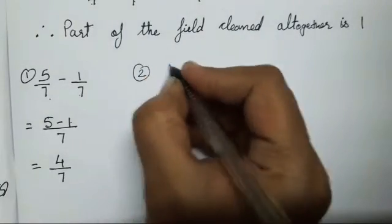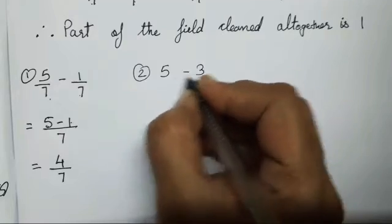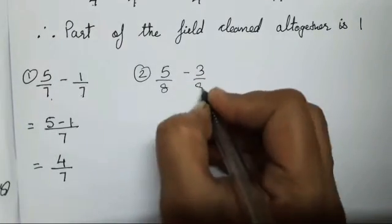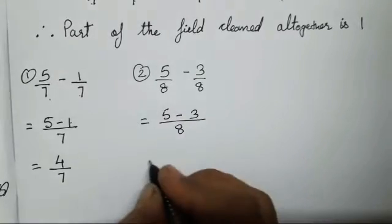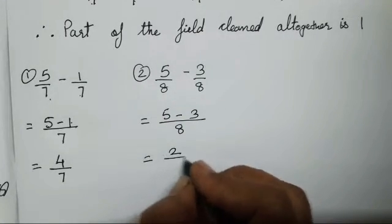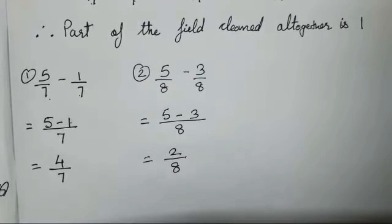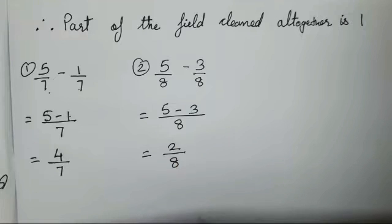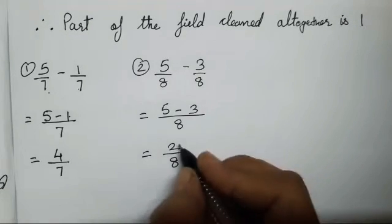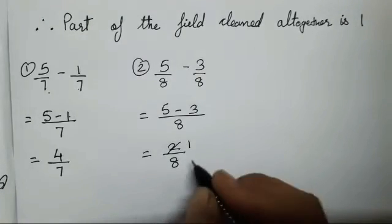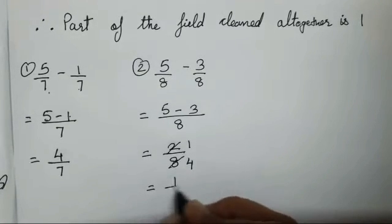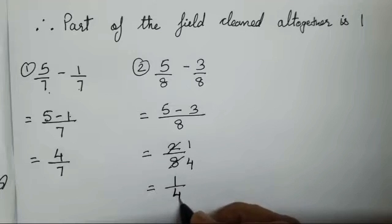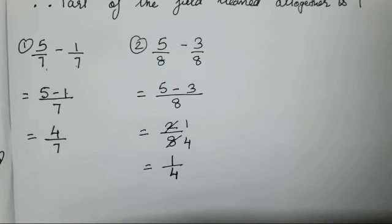The second sum is 5 upon 8 minus 3 upon 8. Let's write the denominator together. 5 minus 3 is going to be 2 upon 8. Now 2 and 8 will come in one single table — it can be reduced. 2 ones are 2, 2 fours are 8. So your fraction is 1 upon 4.